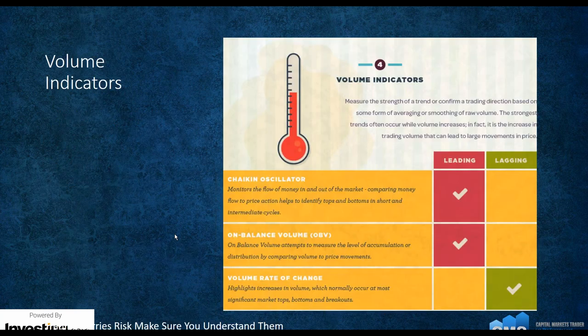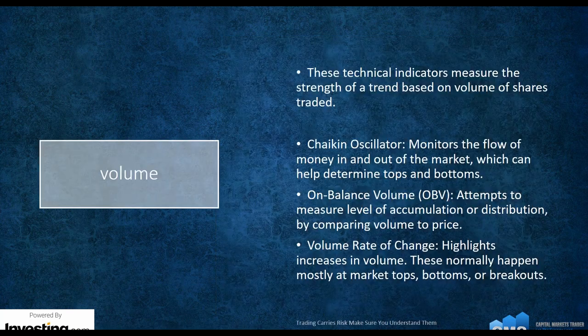We have two popular leading indicators and one lagging for volume. The Chaikin Oscillator monitors the flow of money in and out of the market — comparing money flow to price action helps identify tops and bottoms in short and intermediary cycles. On-Balance Volume attempts to measure the level of accumulation or distribution by comparing volume to price movements. VRC — Volume Rate of Change — highlights increases in volume, which normally occurs at most significant market tops, bottoms, and breakouts. VRC is lagging where the other two are leading indicators.